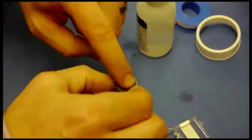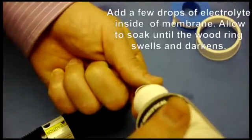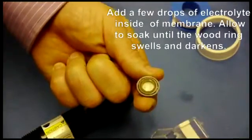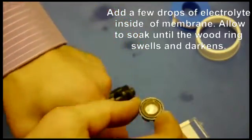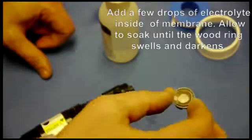What you want to do is place the wood ring into the membrane assembly and then fill it up with your electrolyte solution. Put it cup facing up, fill the solution all the way to the brim, and then set it aside and let the wood ring absorb the electrolyte solution.